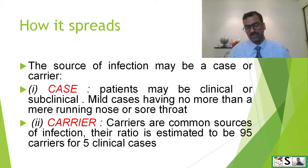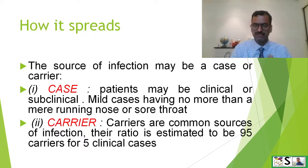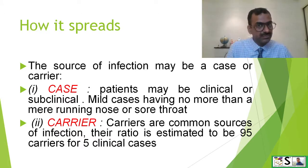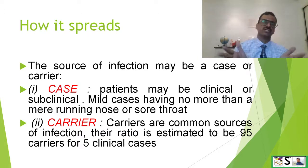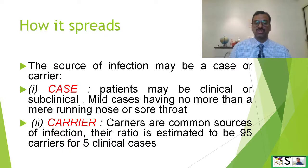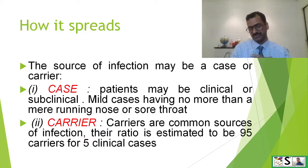And carrier — what is a carrier? A carrier is a child who contains the bacteria but is not suffering from diphtheria; they are not a subclinical or clinical case, just carrying the bacteria. This is a most dangerous situation because no one can identify that the child is a carrier and they can spread infection. Their ratio is estimated to be 95 carriers for every 5 clinical cases.